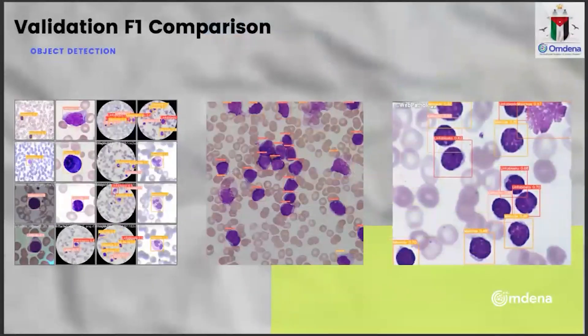The object detection gave us a bounding box around each white blood cell with the percentage of how sure the model is regarding the classification. We can see that it classifies very well the different types of cells in the blood smear images, with different precision levels used to test the model. It did very well on different types of blood smears with almost no difference between different magnifications and pixelations.